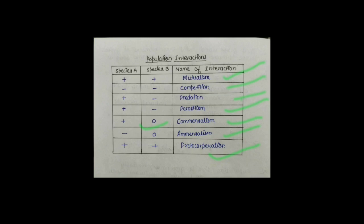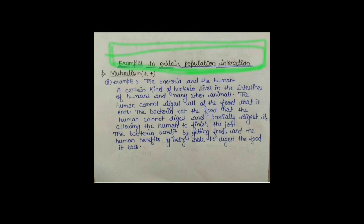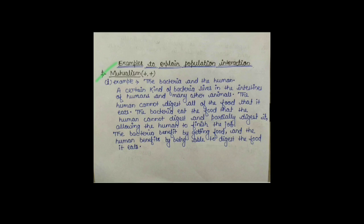अब हम लोग, जितने भी Population Interaction हमने पढ़ा है, इनसे Related Examples जो हमने Last Lecture में देखा था, अब उन Examples का Detail Study हम लोग करते हैं। Examples to Explain Population Interaction — Population Interaction को हम with the help of Example explain करते हैं। सबसे पहला Case हम लोग लेते हैं Mutualism का — Mutualism में दोनों ही Species को फायदा होता है।